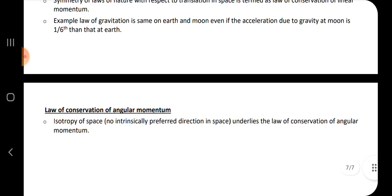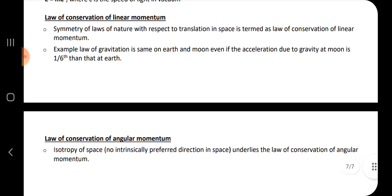Law of conservation of linear momentum. Symmetry of laws of nature with respect to translation in space is termed as law of conservation of linear momentum. Example: law of gravitation is same on earth and moon even if the acceleration due to gravity at moon is 1/6 than that at earth.